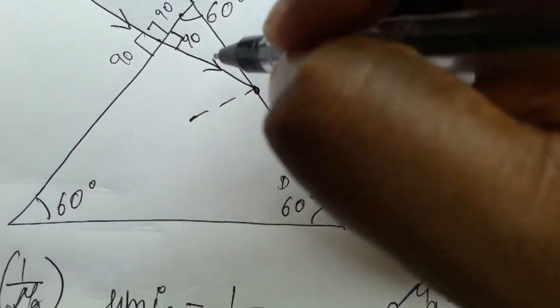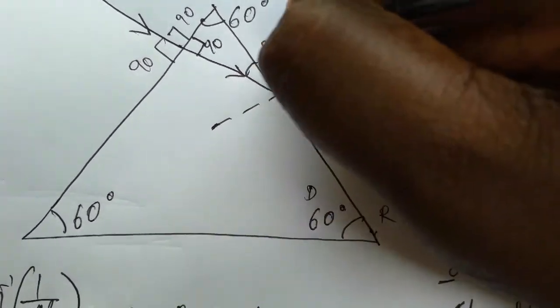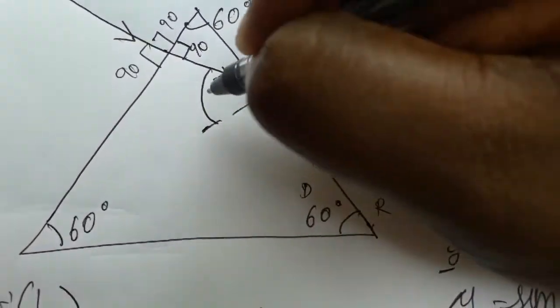One triangle will always be 180 degrees, that means this is 30. And this angle - the normal from incident angle will be 60 degrees. That means 60 degrees is more than critical angle 42 degrees.